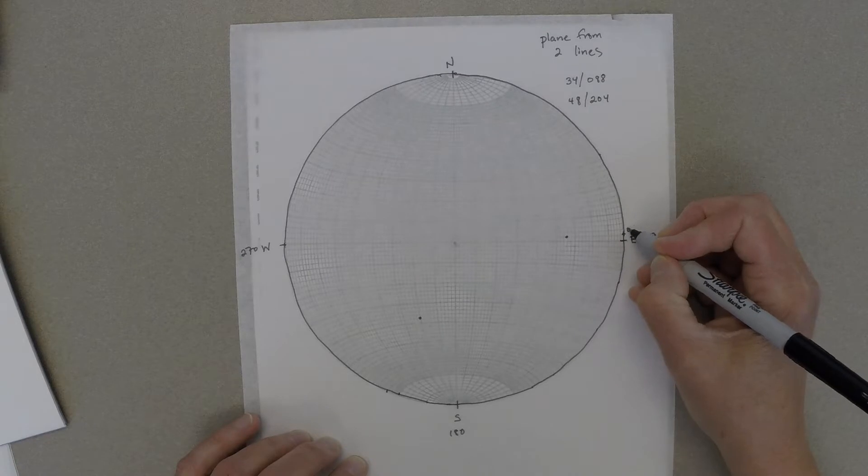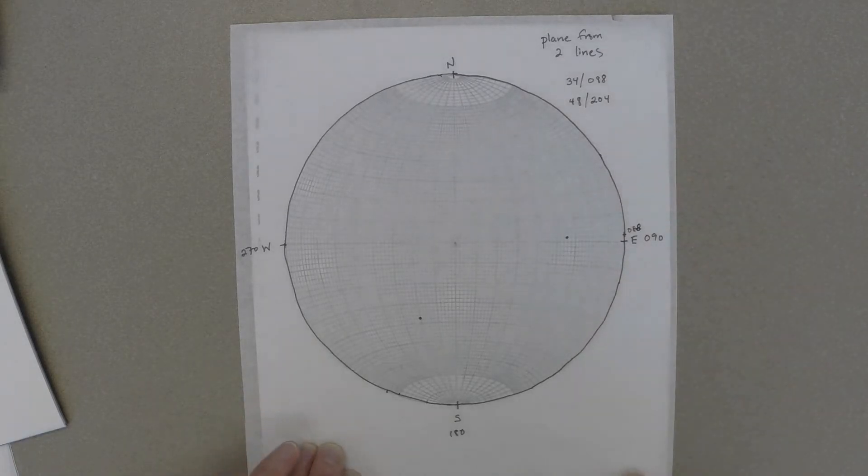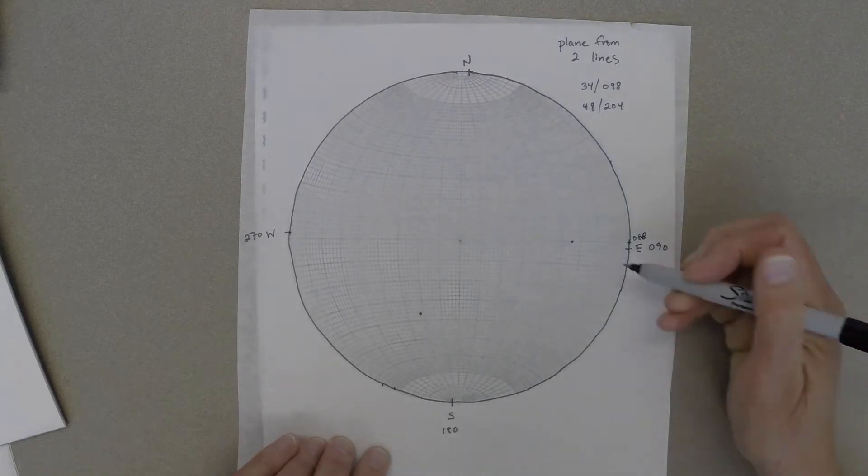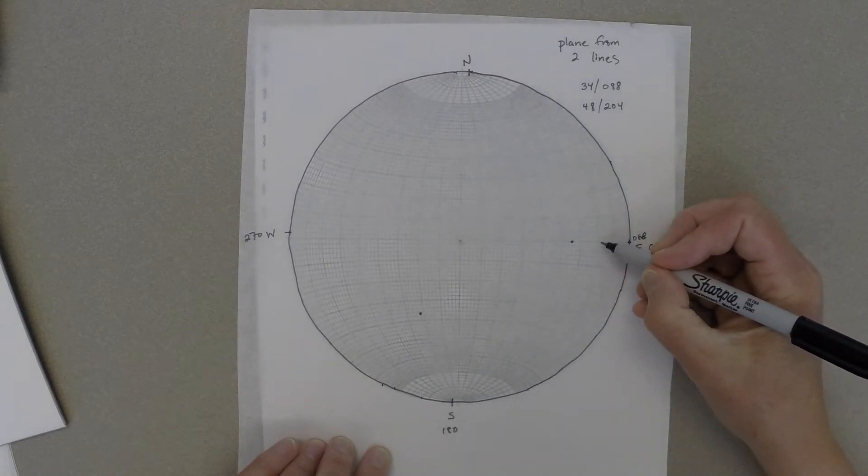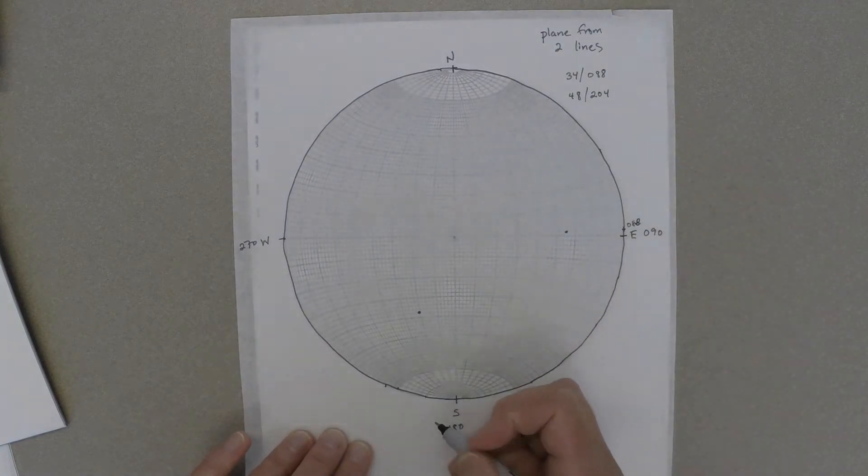The first one has a trend of 088 degrees, and then to check its plunge, we'll spin the tracing paper so that the dot lies on the equator, count in along the equator, and that has a plunge of 34 degrees.